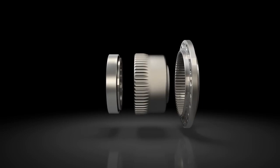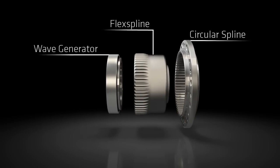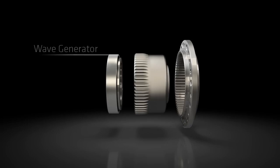A Harmonic Gear Reducer primarily consists of three key components: a circular spline, a flex spline, and a wave generator.